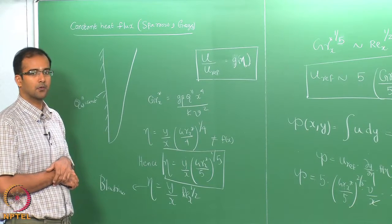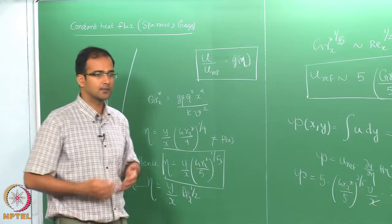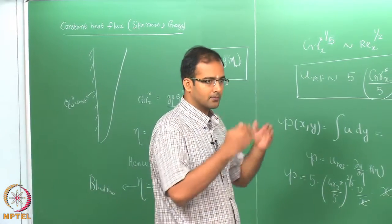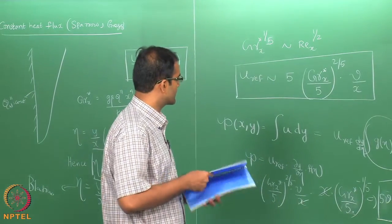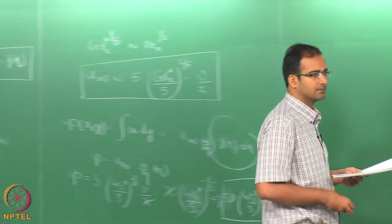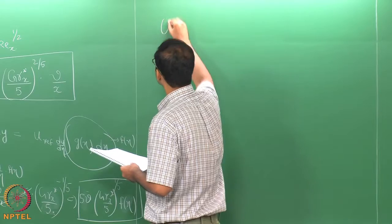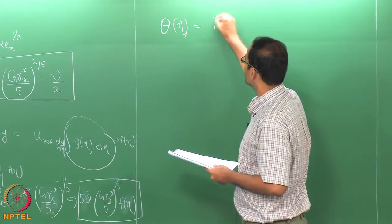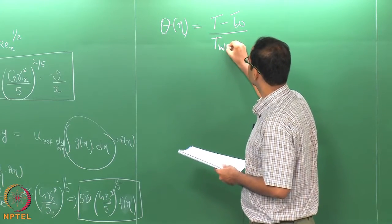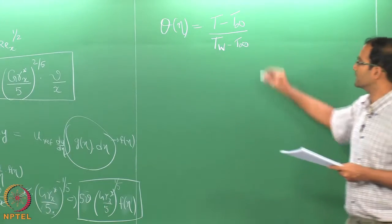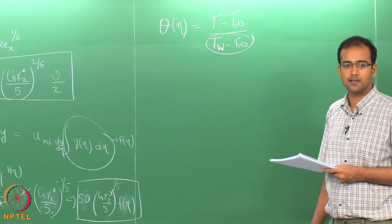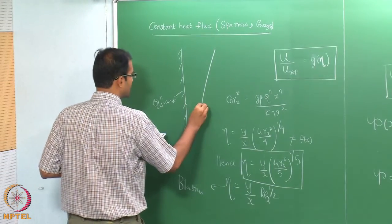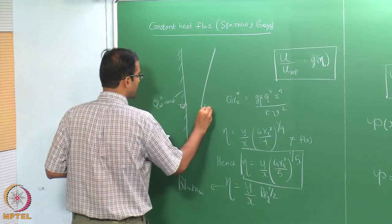Now we can substitute this into the governing momentum and energy equations — substituting for u, v, du/dx, du/dy, and d²u/dy² — and reduce the partial differential equations into a similarity equation. Before doing that, we also need to find the similarity variable for theta. Let us assume that theta is a function of eta, but we have to find the right non-dimensionalization. In the constant wall temperature case, we used T minus T_infinity divided by T_wall minus T_infinity, but in the constant heat flux case we do not know the wall temperature.